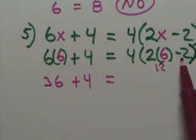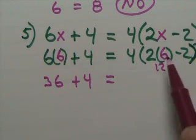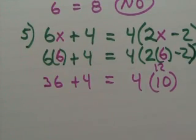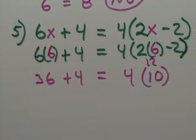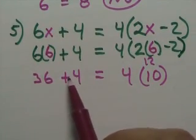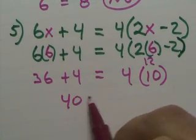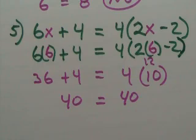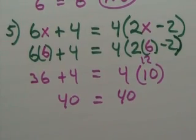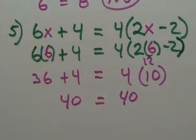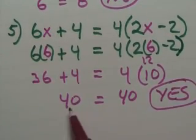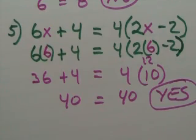So that's 12 minus 2. 12 minus 2 is 10. So we have 4 times 10. 36 and 4 is 40. And 4 times 10 is 40. So the question is, does 6 work for this? Yes, it does. The answer is yes. It is a solution. It is the answer. We know that because the left side equals the right side.